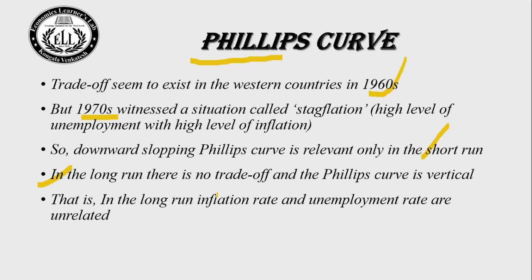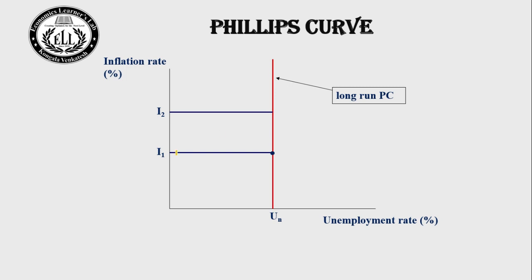In the long run, inflation rate and unemployment rate are unrelated. The vertical long run Phillips curve looks like this: at inflation rate I1, the unemployment rate is UN. When the inflation rate increases from I1 to I2, the unemployment rate remains the same. So according to critics of the Phillips curve, the long run Phillips curve is vertical.